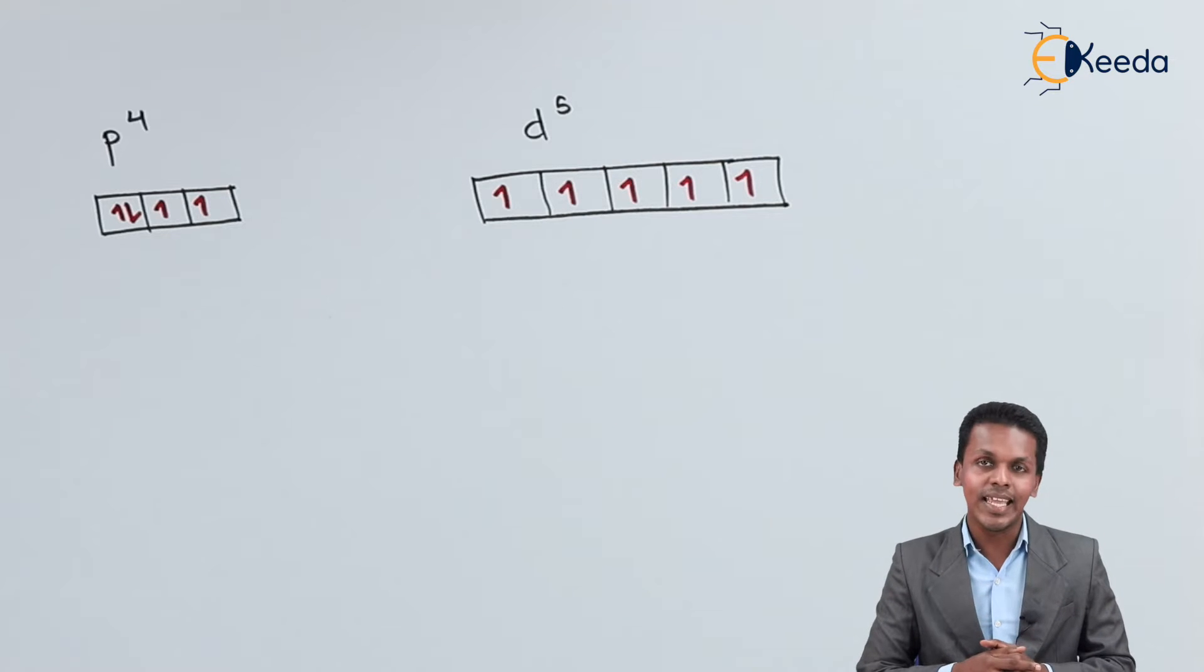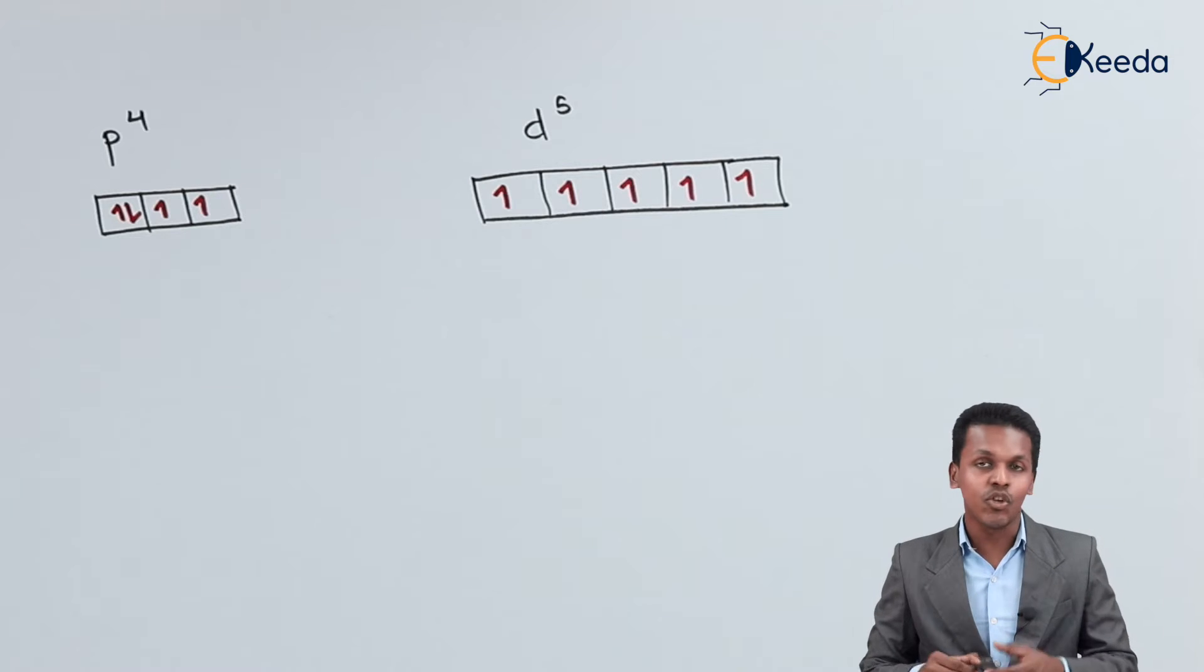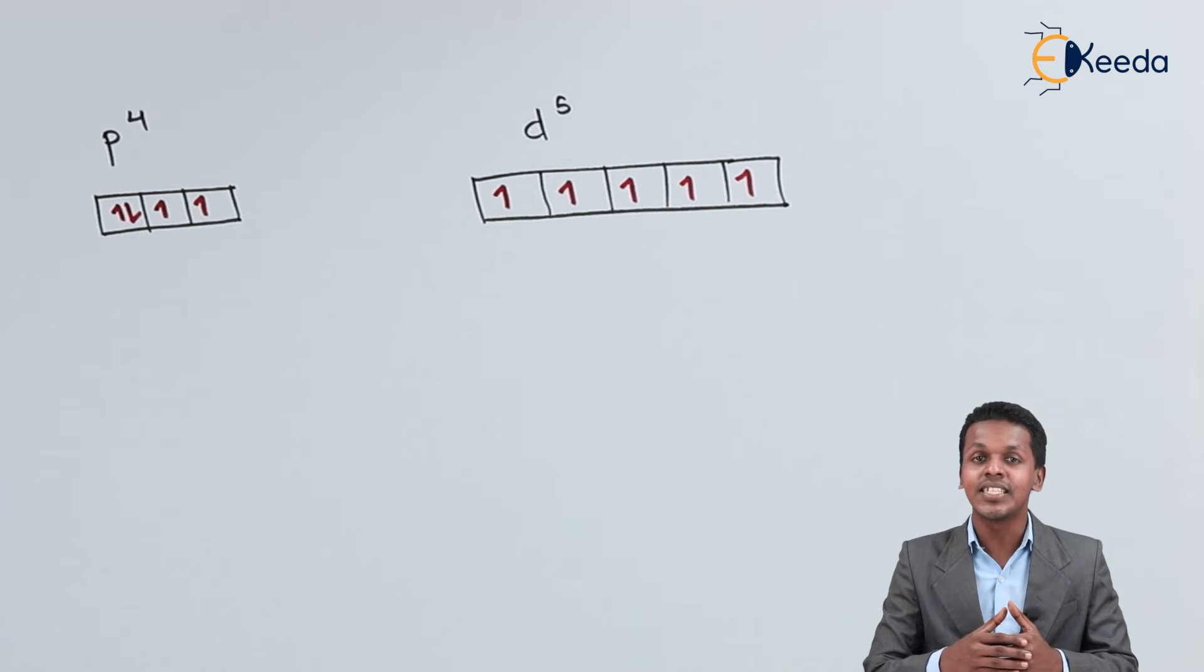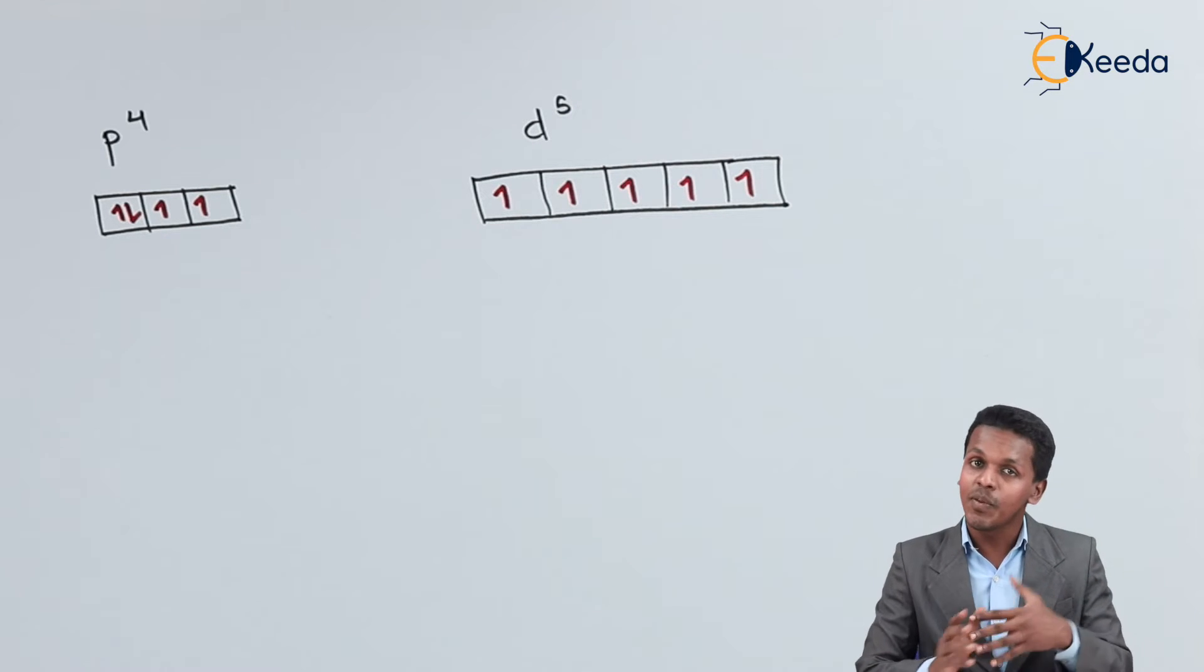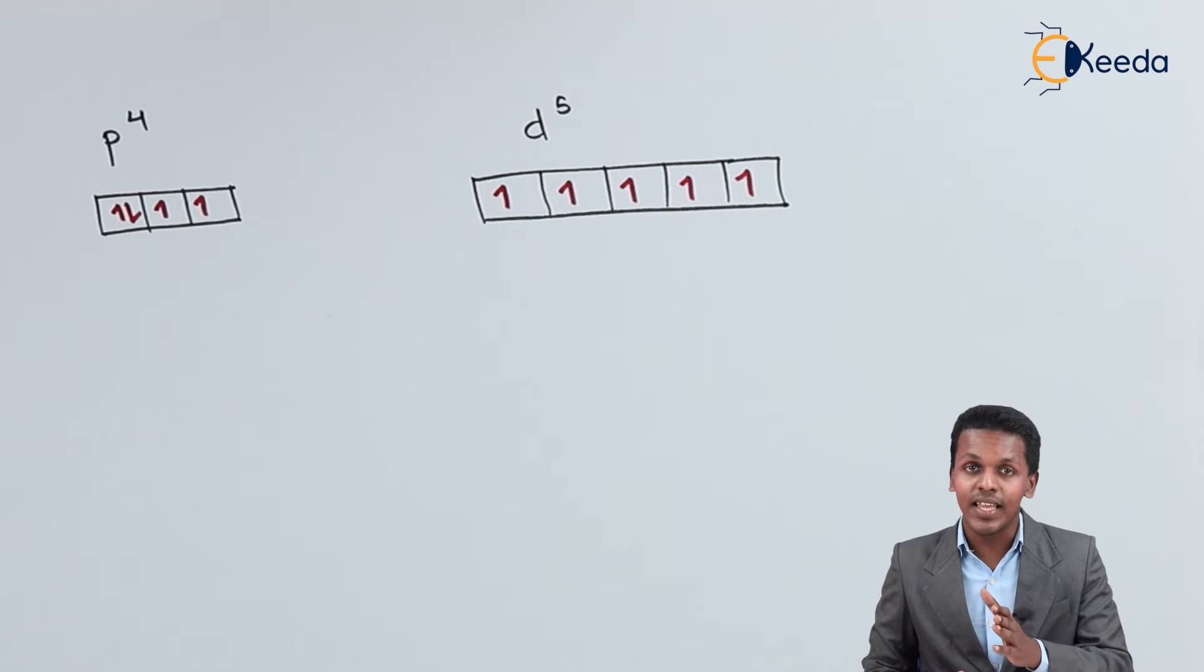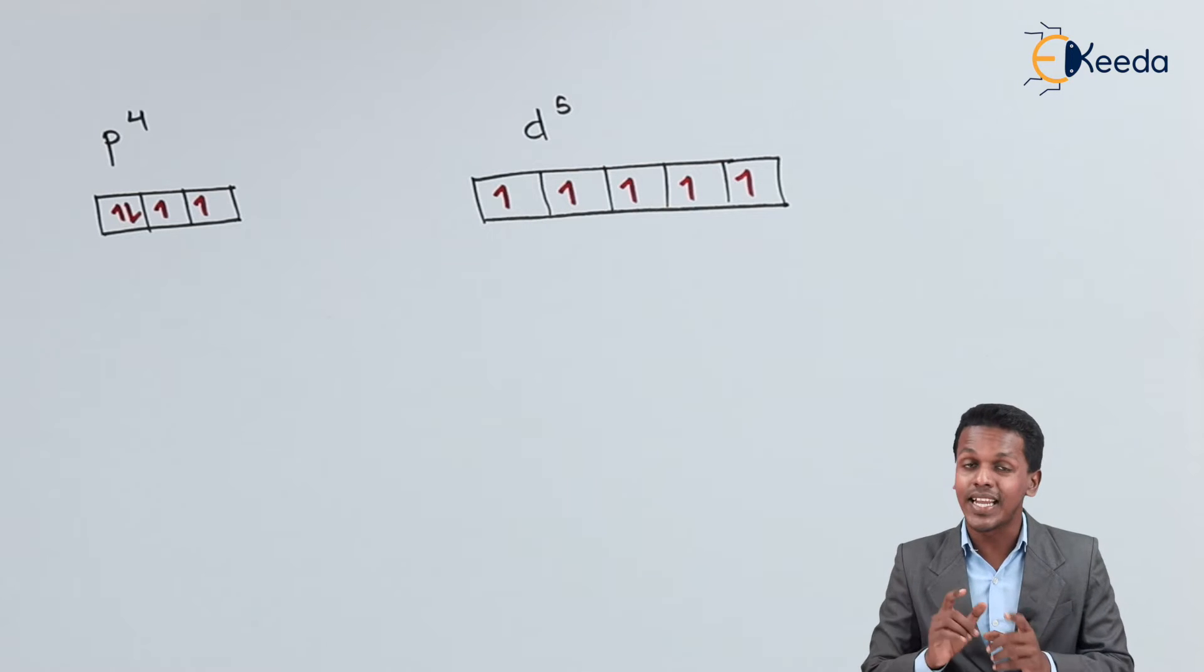Now let me talk about the next one. Suppose if we have S orbital. And in S orbital as we understand that there is only one orbital. So that is the reason, suppose if we have to fill two electrons, the two electrons will be filled. But the thing is the electrons that we are filling, in that case one of the electron will be of a positive spin, that is plus half. And the other one will have a spin quantum number of minus half. So that is for sure we have to follow this.